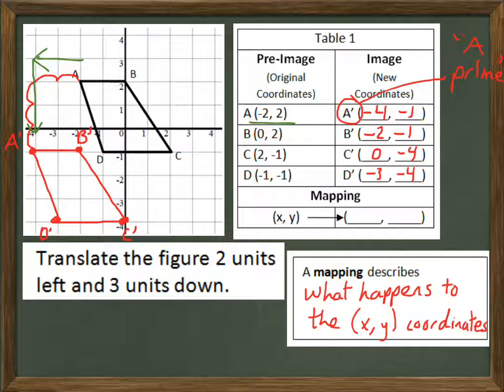Well, let's take a look. If I look at the coordinates for A, the X started at negative two. It ended at negative four. The B started at zero, ended at negative two. C started at two, ended at zero. What is happening to all those numbers? Well, that X coordinate is being subtracted by two. Negative two minus two is negative four. Zero minus two is negative two. Two minus two is zero. Negative one minus two is negative three. We are subtracting by two.